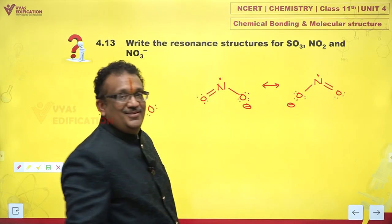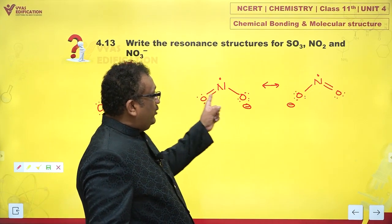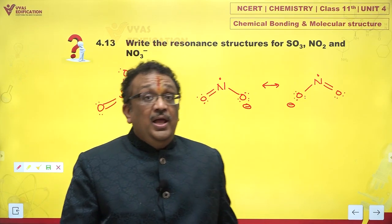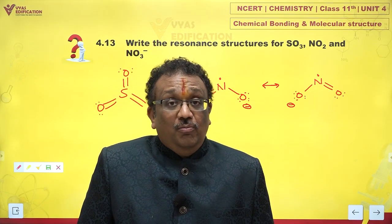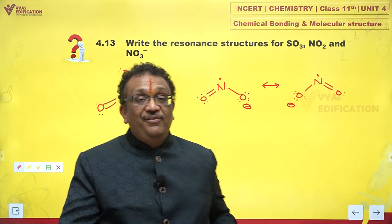So NO2 actually is a resonance hybrid in between these two structures. Nitrogen carries an unpaired electron, and the bond order of the NO bond is neither one nor two. It is in between, it is average, it is 1.5.